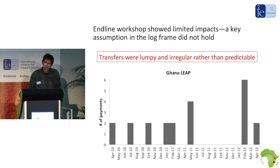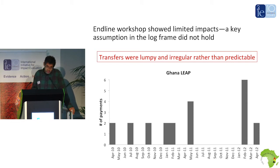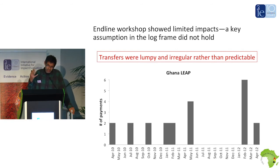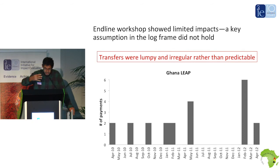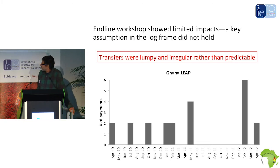When we got to the endline in 2012, there were no impacts of the program. We dug a little deeper and obtained the payment schedules from the administrative database. You could see that payments were not predictable — a key assumption of the log frame did not hold. That assumption was that transfers would be delivered in a timely and predictable manner, and they were not. This led to a lot of changes within the program in terms of efficient and timely delivery of benefits.